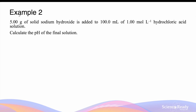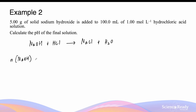Now let's look at example 2. Five grams of solid sodium hydroxide is added to 100 milliliters of a 1 mol per liter solution of hydrochloric acid. Calculate the pH of the final solution. Again, we start by writing a chemical equation to represent the reaction between the acid and base. This gives sodium chloride and water. As discussed in the previous question, the ratio of this reaction is 1 to 1. The difference between this question and the previous example is that the sodium hydroxide is added as a solid rather than a solution.